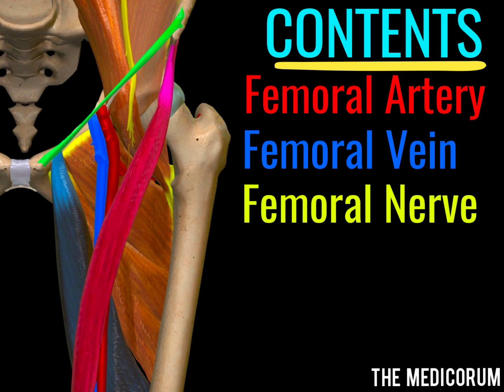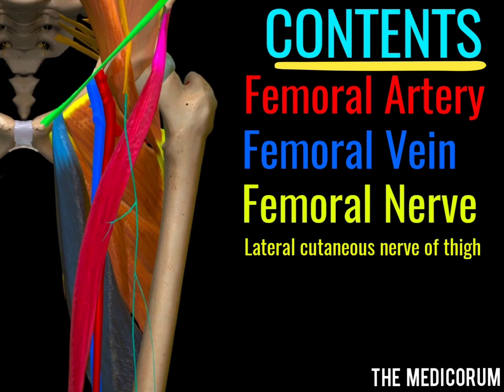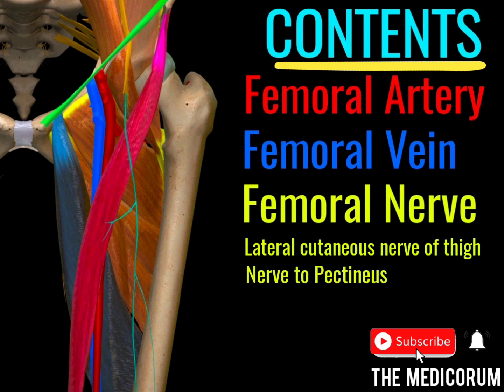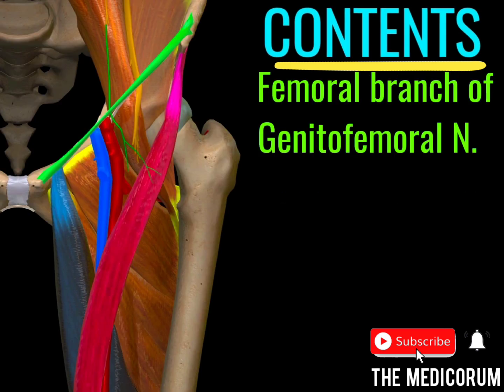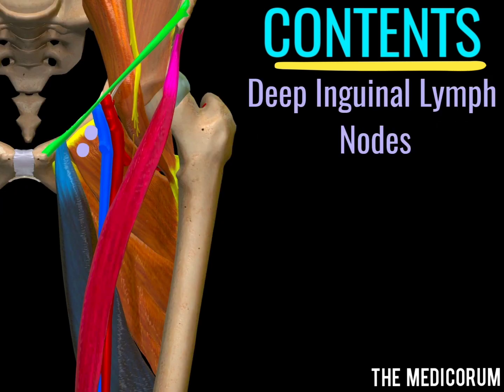The third content is the femoral nerve. The femoral nerve in the femoral triangle also gives some of its branches, and some of those visible include the lateral cutaneous nerve of the thigh and the nerve to pectineus. Next is the femoral branch of the genitofemoral nerve, and last we have the deep inguinal lymph nodes. These are all the contents of the femoral triangle.